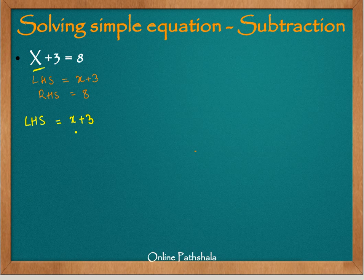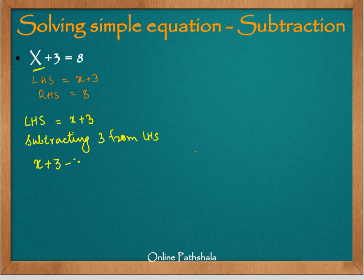If I want to just get x, I can simply subtract 3 from this equation. Subtracting 3 from the LHS, we get x plus 3 minus 3. These two cancel out and what we get is simply x. Now the right hand side is 8, and because we have to maintain the balance, we also subtract 3 from the right hand side. So we get 5.